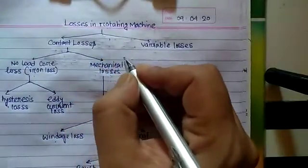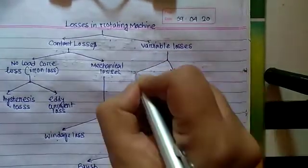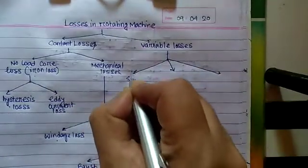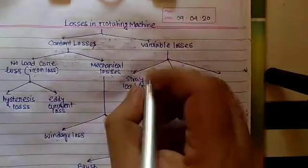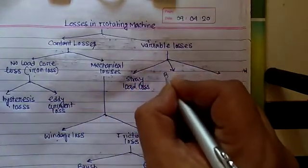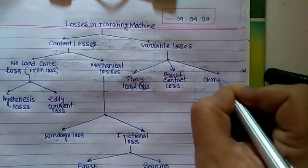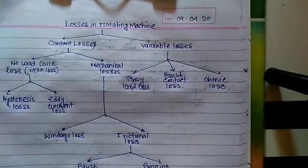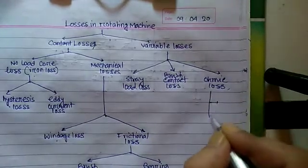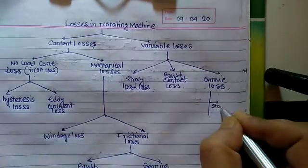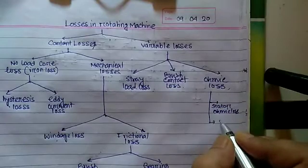Variable losses have three parts: stray load loss, brush contact loss, and ohmic loss. Ohmic loss has two parts: stator ohmic loss and rotor ohmic loss.